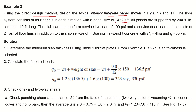The floor system consists of four panels in each direction with a panel size of 24 by 20 feet. All panels are supported by 20 by 20 inch columns that are 12 feet long. The slab carries a uniform service live load of 100 psf and a service dead load of 24 psf for floor finish, in addition to the slab self-weight. Use normal weight concrete with f'c = 4000 psi and fy = 60,000 psi.